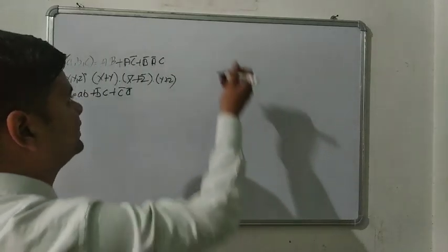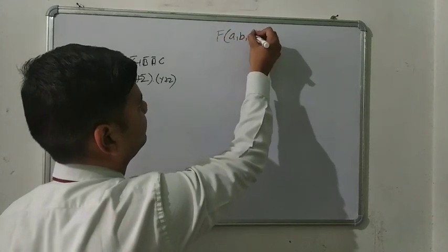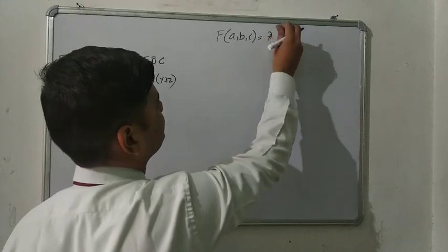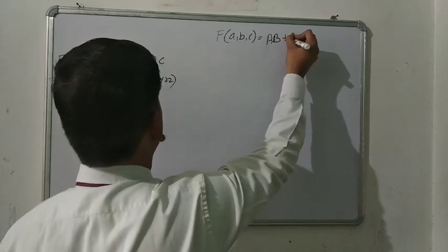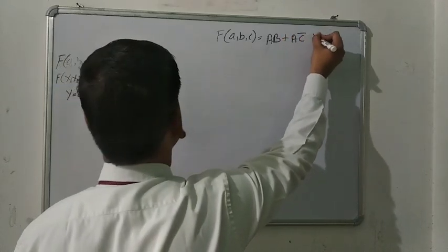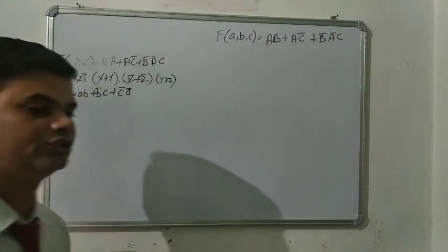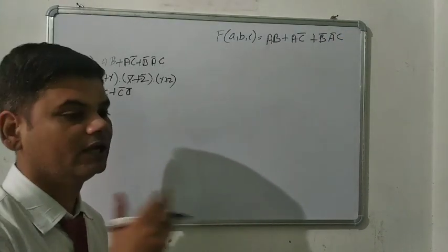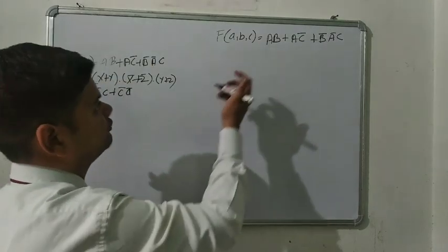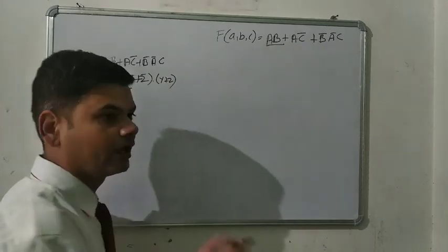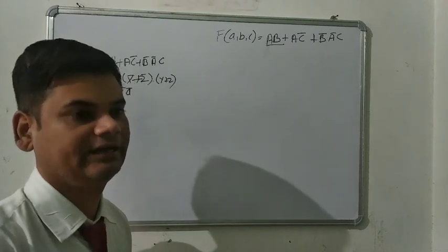Now we have to discuss the first question. We are having the expression F(A, B, C). The expression is AB plus AC̄ plus B̄ĀC. We have to draw the logic circuit for this expression. Starting with the first term AB — the multiply symbol means we are using the AND gate.